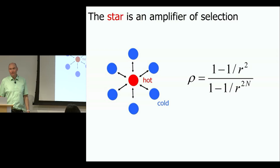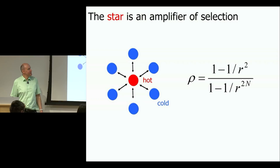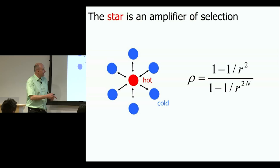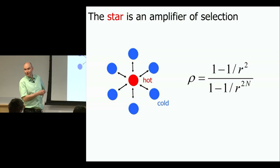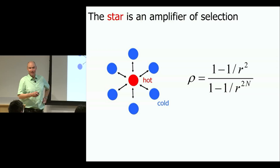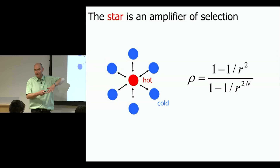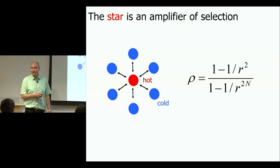Can we find amplifiers of selection? Ares Lieberman in his PhD thesis found the first amplifier: the star. The star has a center that is hot because many things lead into it, and a cold periphery. The fixation probability of a randomly placed mutant on a star is the same formula but R has been replaced by R squared. So if the fitness advantage was 2, now it's 4. If the fitness disadvantage was 1/2, now it's 1/4. It augments advantageous mutants and reduces disadvantageous mutants — the star is an amplifier of selection.